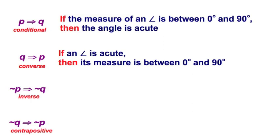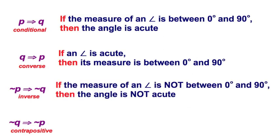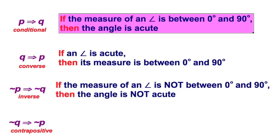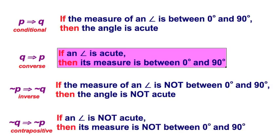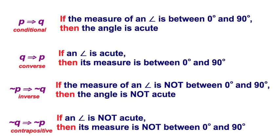The inverse, we're getting good at this, I take this statement, and I take the negation of both, hypothesis and conclusion. If the measure of an angle is not between 0 and 90, then the angle is not acute. Notice, you don't say something like obtuse here. We just say it's not acute. Now, let's move on to the last, the contrapositive. Again, I take the converse, and I take the negation of both parts of the statement. If an angle is not acute, then its measure is not between 0 and 90.